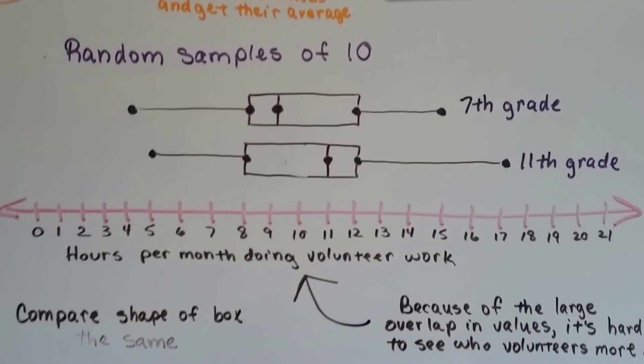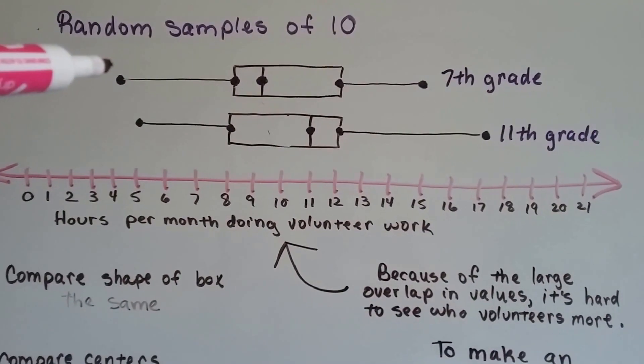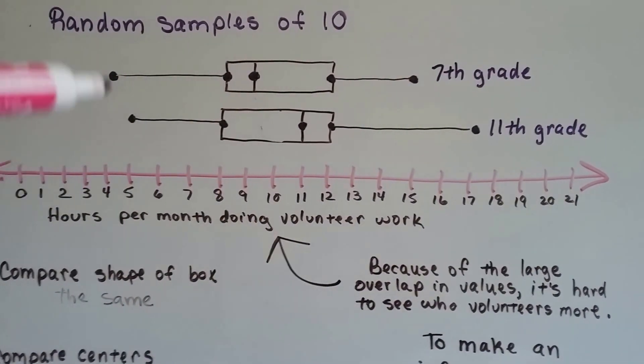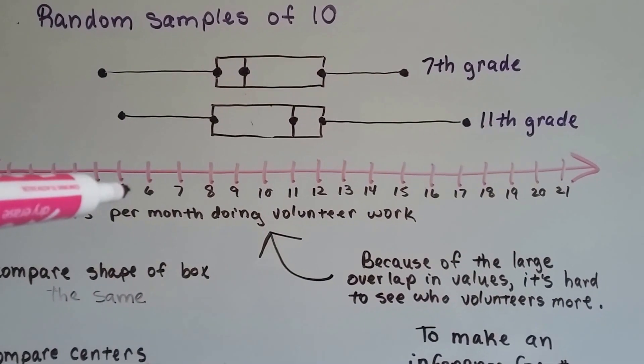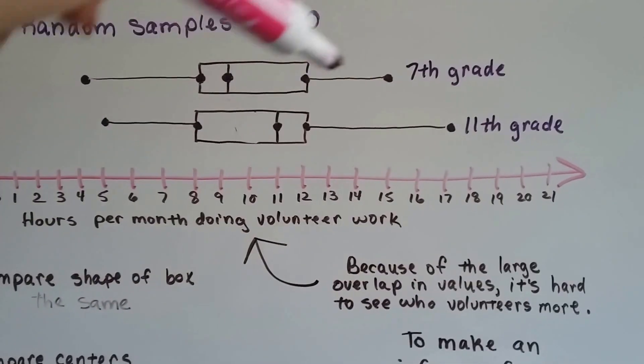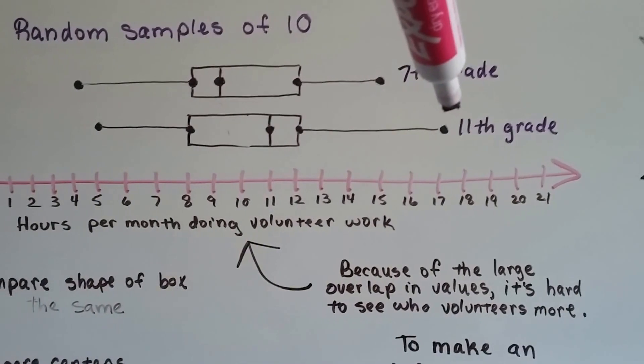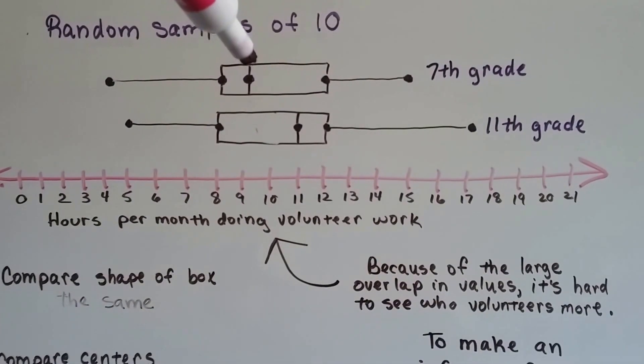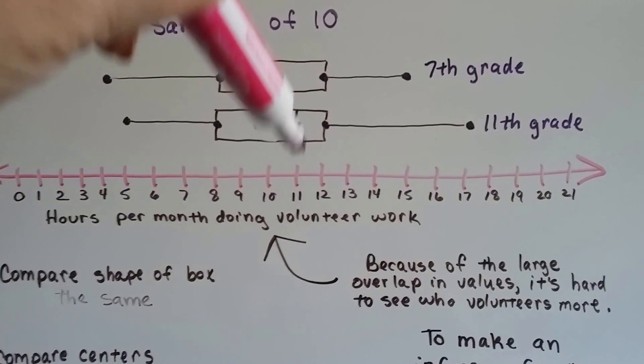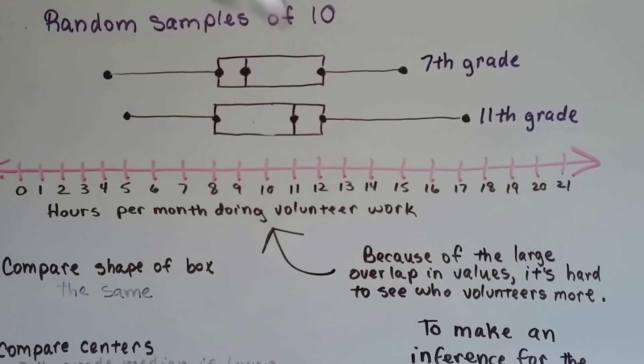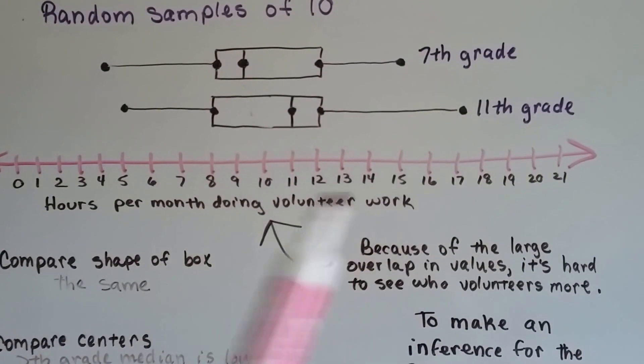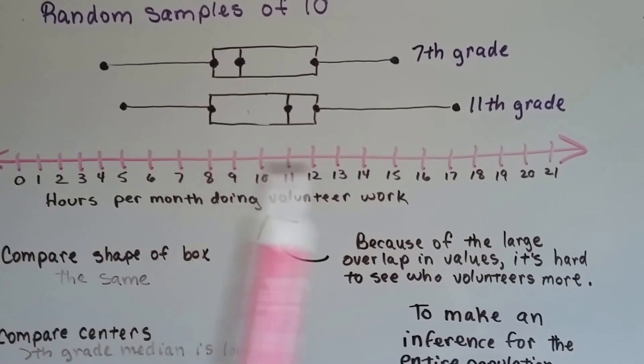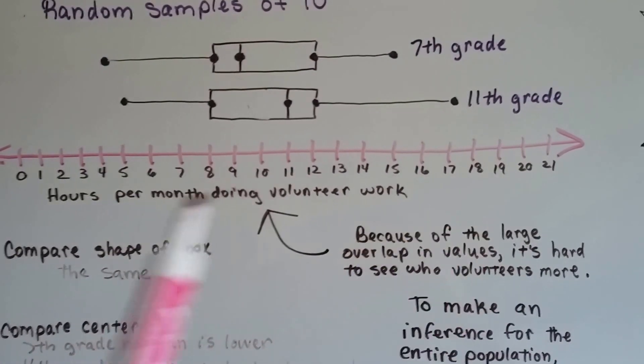This is the information we got. The low end of 7th grade is 4 on this end of the whisker, but for 11th grade it was 5. And the high end was 15 for 7th grade, but 17 for 11th grade. We want to see who volunteers more. We can see the medians are different, here it's 9 and here it's 11. And these are the hours they do in one month of volunteer work.